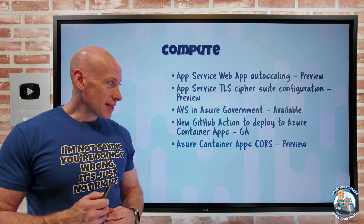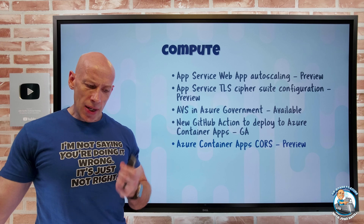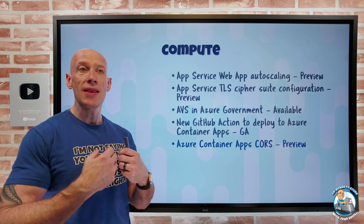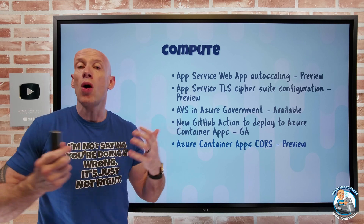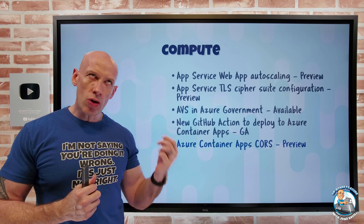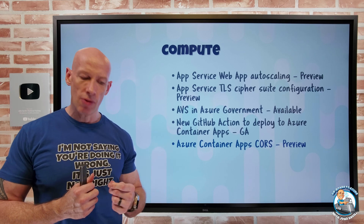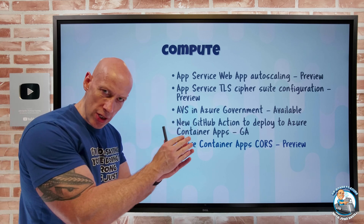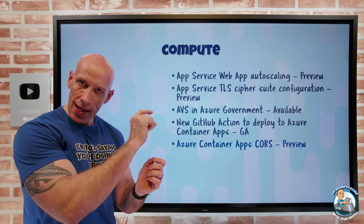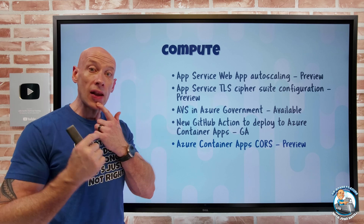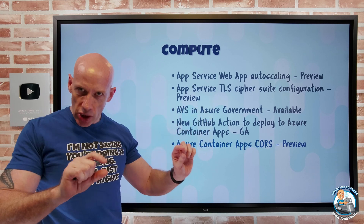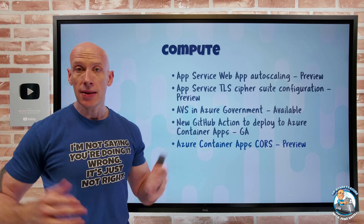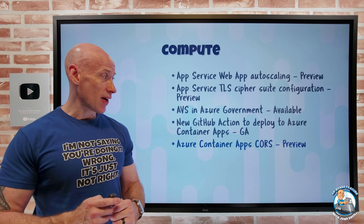Azure Container Apps now has CORS in preview. By default, if I try to make a request to a domain that is not the origin of the app I'm accessing, it won't work. But I can do a cross-origin resource sharing configuration — I can enable CORS and specify particular origins, i.e. domains I want to allow those calls from, and it will work. That's now available in preview.